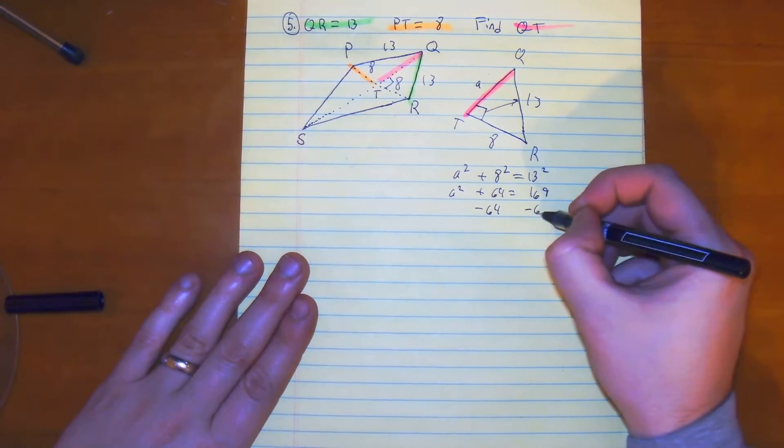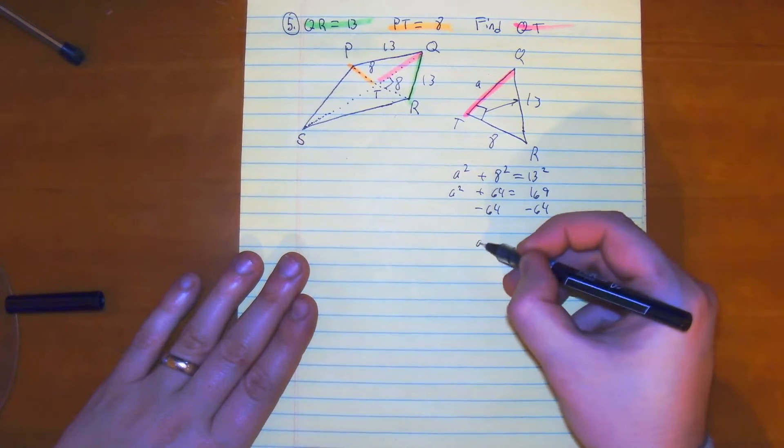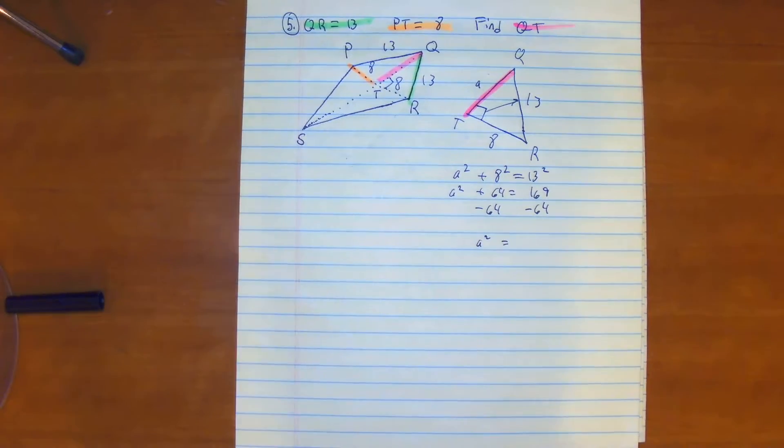Subtract 64 from both sides. We get a² is equal to... 169 minus 64 is 105.